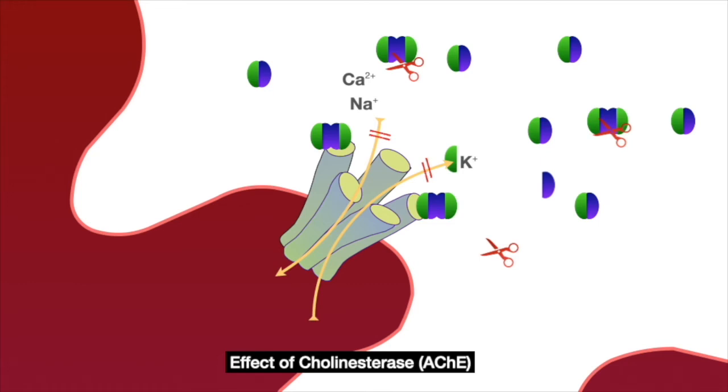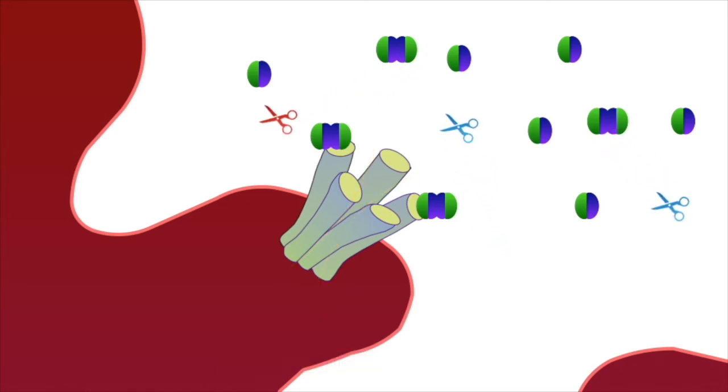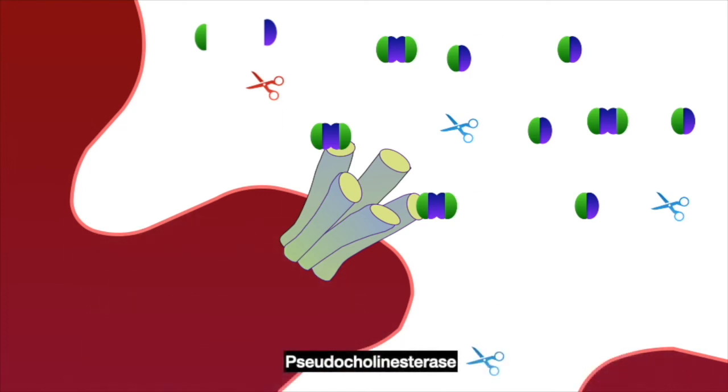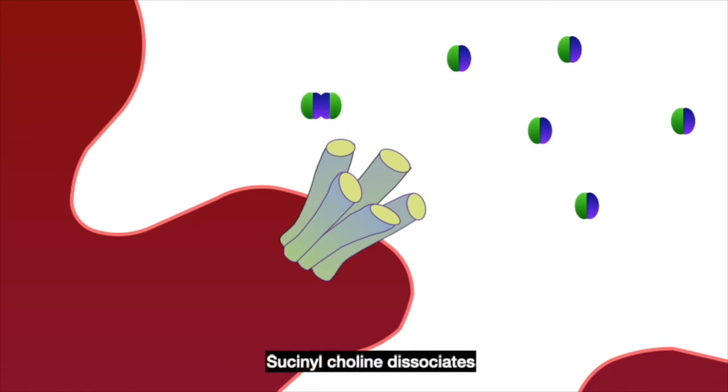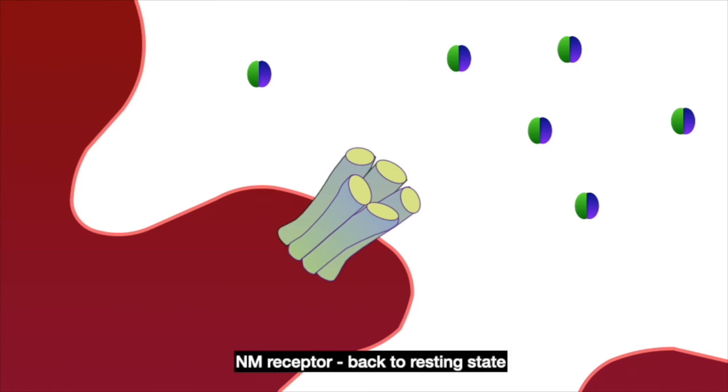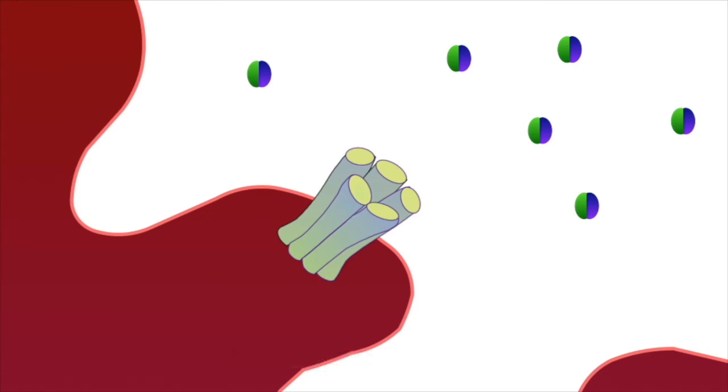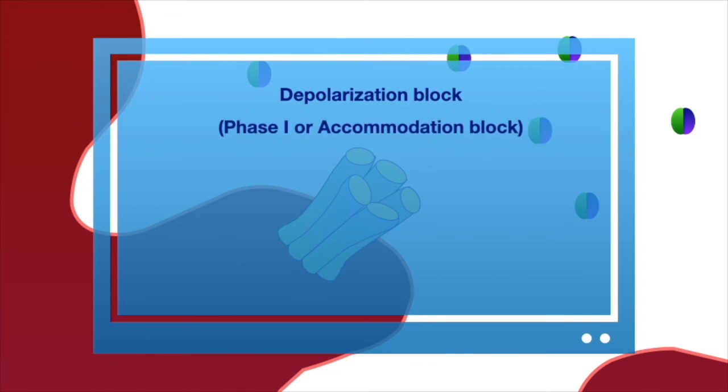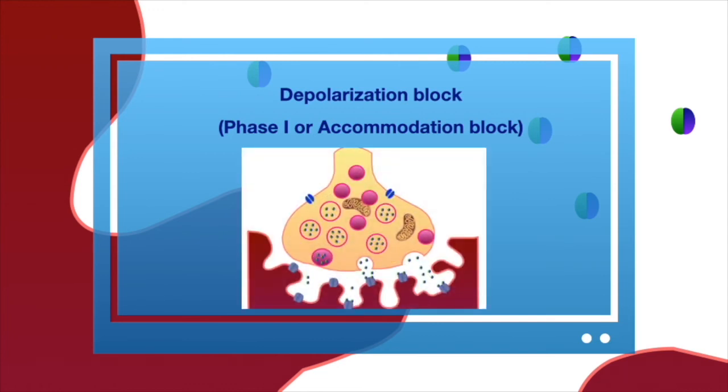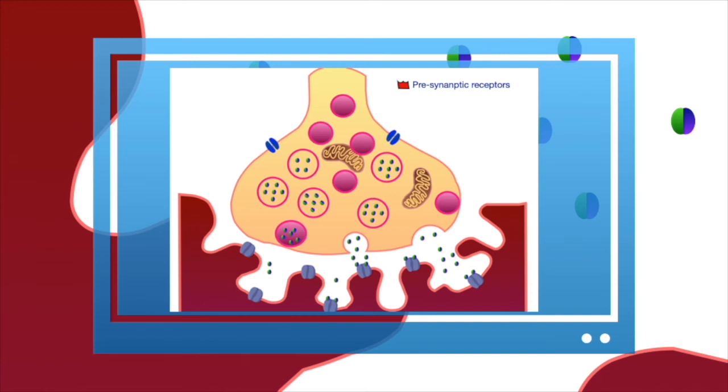Recovery from phase one block occurs as succinylcholine diffuses away from the neuromuscular junction down a concentration gradient as the plasma concentration decreases. It is metabolized by plasma cholinesterase, previously called pseudocholinesterase. Now the acetylcholine receptor is back to resting state. Depolarization block is also called phase one or accommodation block, and is often preceded by muscle fasciculation. This is probably the result of the pre-junctional action of succinylcholine stimulating the acetylcholine receptors on the motor nerve, causing repetitive firing and release of neuromuscular transmitter.